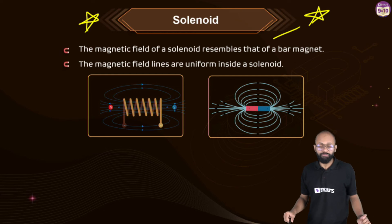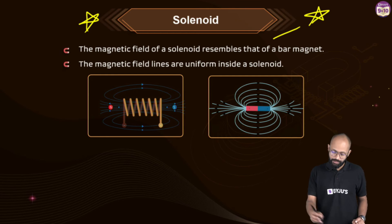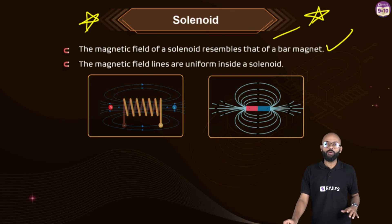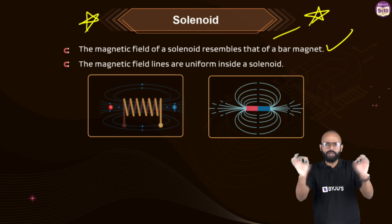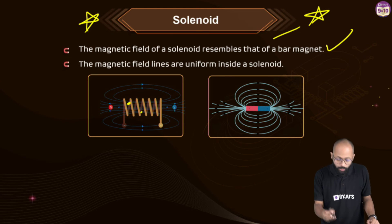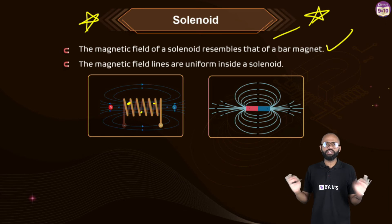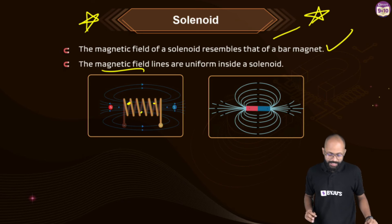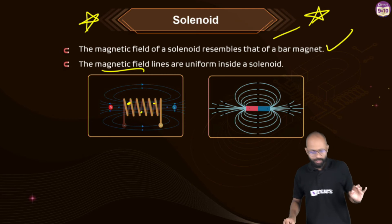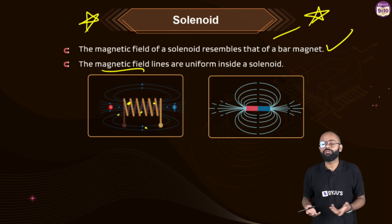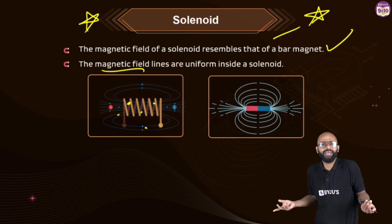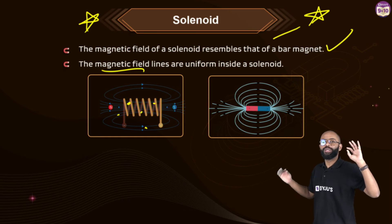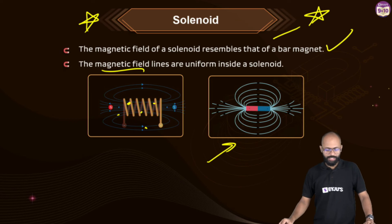Key characteristics of the solenoid: the magnetic field of a solenoid resembles that of a bar magnet. The magnetic field lines are uniform inside a solenoid — the magnetic field strength is the same at any point inside. This is a previous-year question topic. Outside, near the poles, the field is stronger; but inside the solenoid you get a uniform magnetic field.